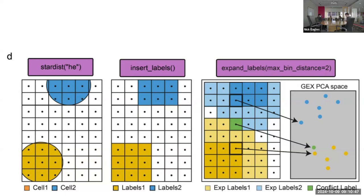To decide which cell an ambiguous bin gets assigned to, they use PCA on the gene expression to summarize it and see where that bin locates in PCA space. In PCA space it will be generally closer to one cell than the other — in this case it looks more like the yellow cell, so they assign it there, even though it's equidistant from yellow and blue. Regarding the polygon shape, Stardist requires star convex polygons, so it covers most of the inside of the cell.